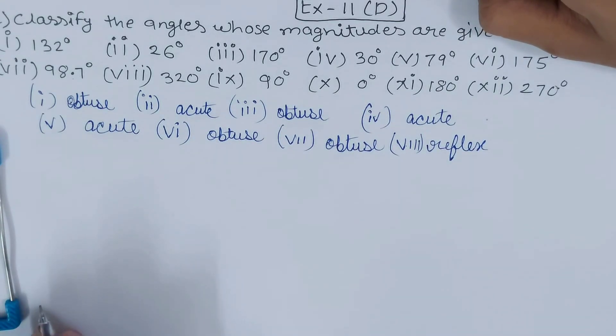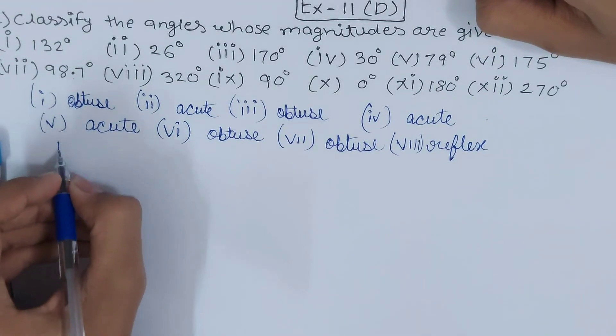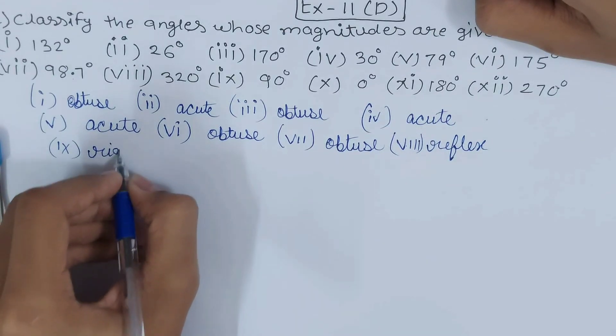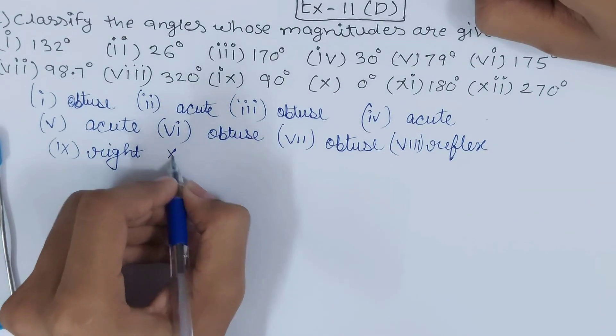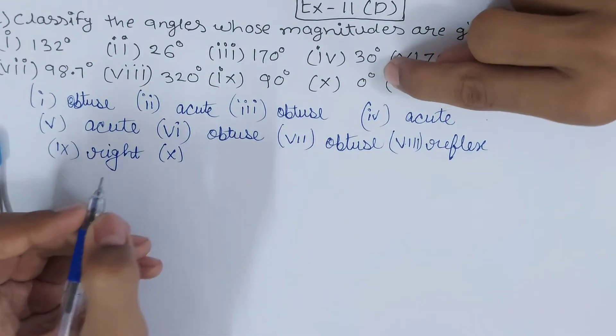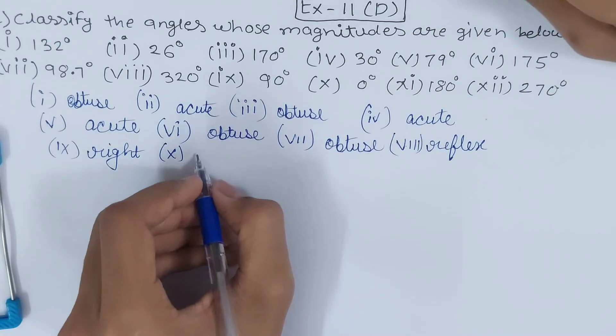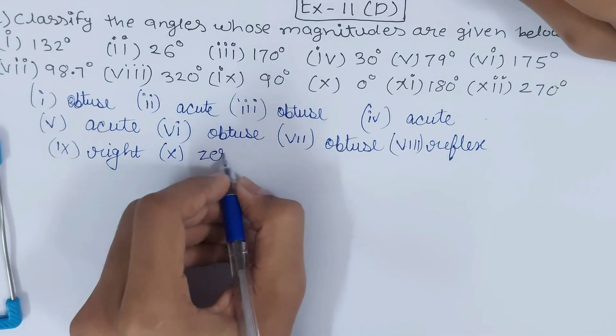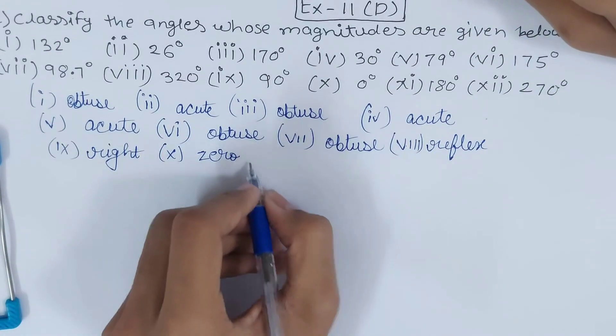Then you have 90 degrees - so 90 degrees is a right angle. Then part 10, zero degrees - for zero degrees there is a special name, that is called the zero angle.